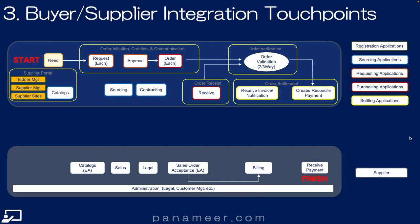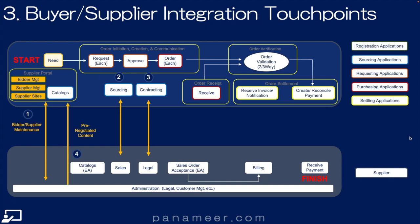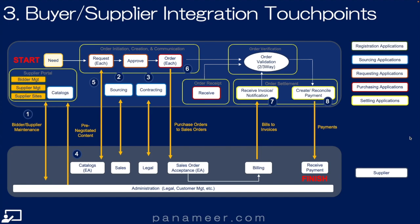Slide 3: Buyer-supplier integration touchpoints. Here we step through the eight integration points. First, buyer-supplier maintenance. Next, sourcing. Then contracting. Then cataloging. Then requesting through those catalogs. Then ordering. Then billing back via an invoice. And finally, payments.